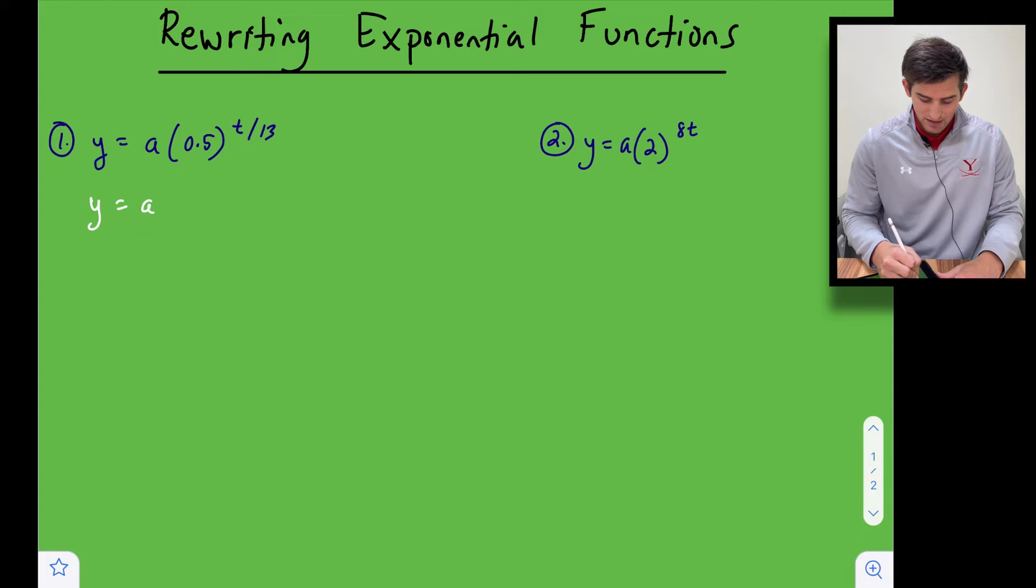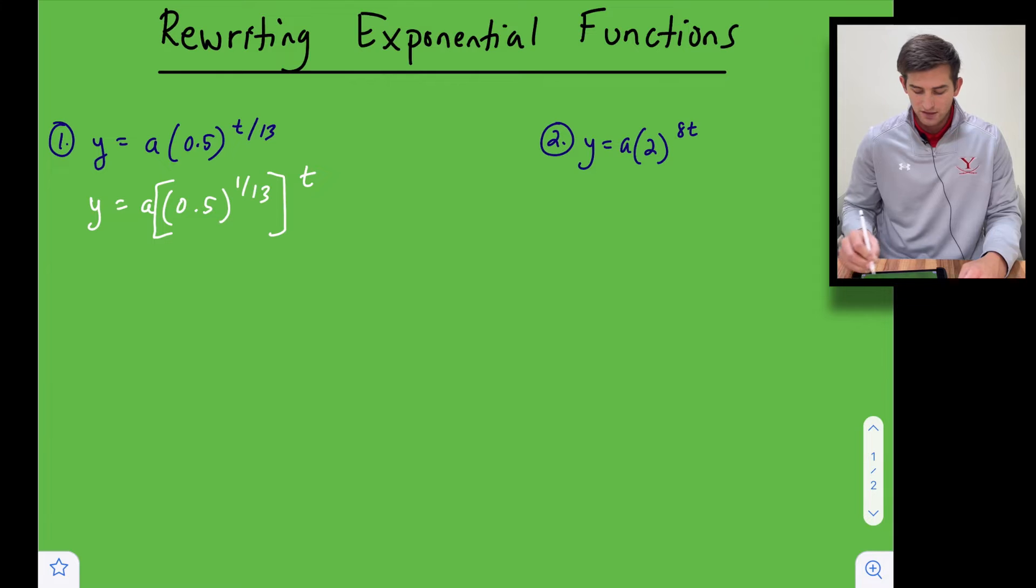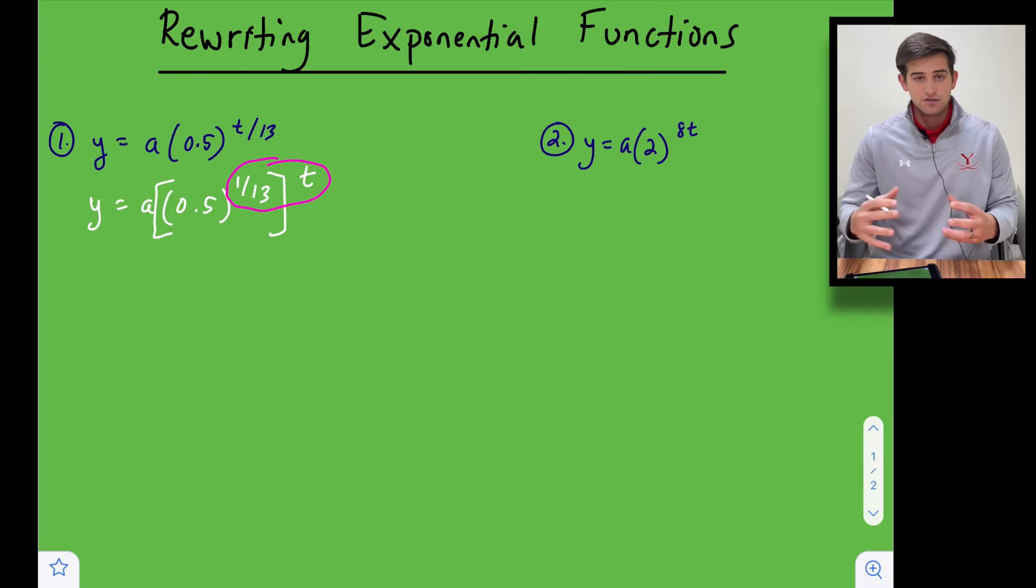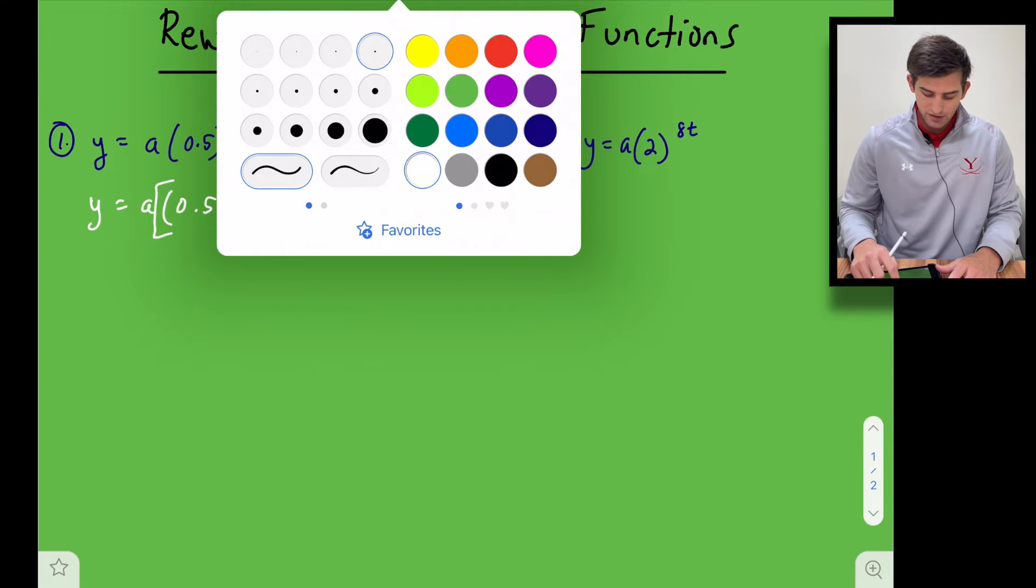We're going to say y equals a and then we can do times 0.5 to the 1 over 13 and then we're going to raise that to the power of t, because if we were to see this then we could say okay this is like two powers next to each other, so there's a product and exponent rule that says we could multiply those powers together so that would be t over 13. So essentially we are undoing that multiplication there.